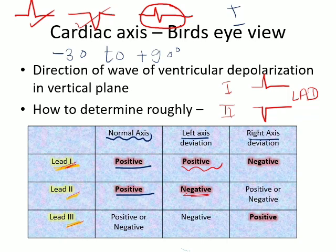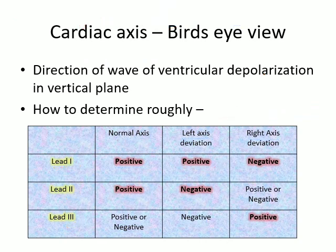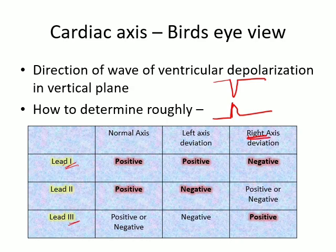For right axis deviation, focus on Lead I and Lead III. If Lead I is predominantly negative and Lead III is predominantly positive, it means the axis is directed rightward — right axis deviation. That's a simple way of remembering the axis and identifying any left or right axis deviation.